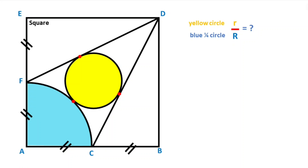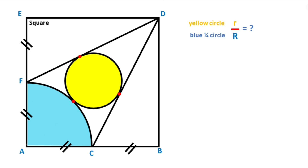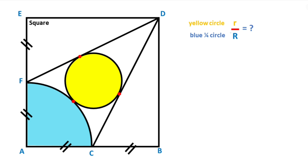Hello everyone. In this video we have one square and one quarter circle. Point A is given as the center of the quarter circle. These two points are given as tangent points, and two points are given as midpoints. The question is: what is the ratio of the radii of the circles?